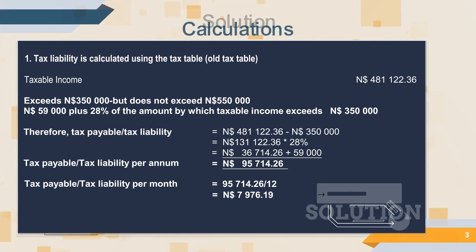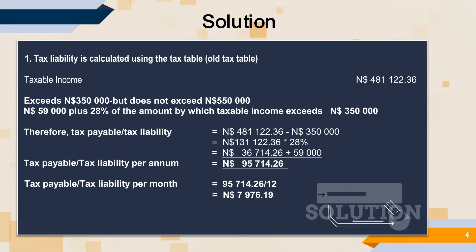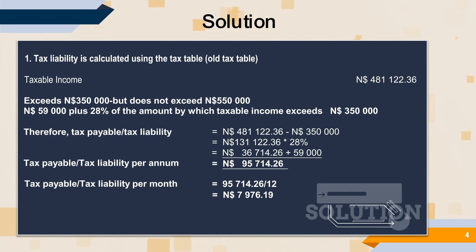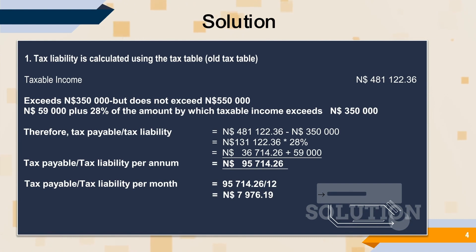Let's get calculating. Your taxable income was $481,122.36. You will take $481,122.36 and deduct $350,000. You will then get $131,122.36. You will multiply $131,122.36 by 28%, giving you $36,714.26. You will then add $59,000 to the $36,714.26.